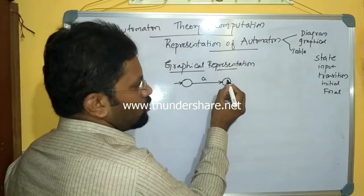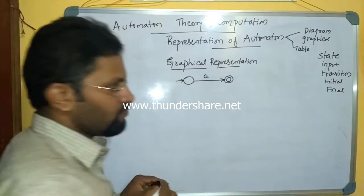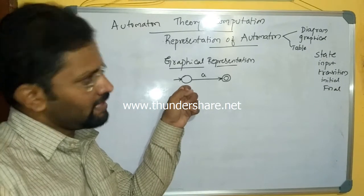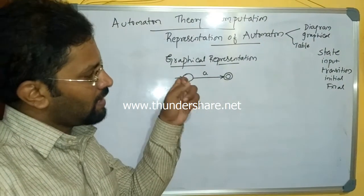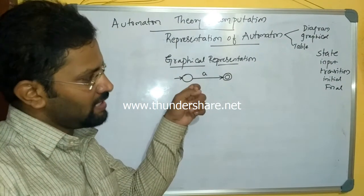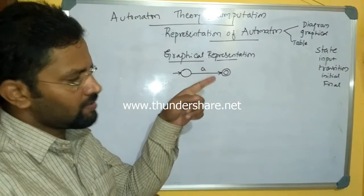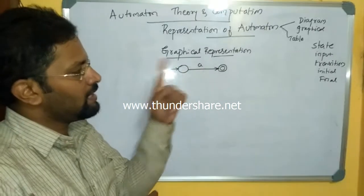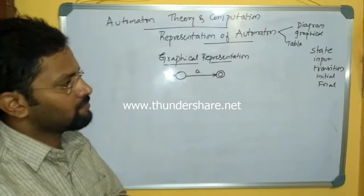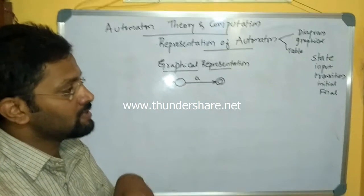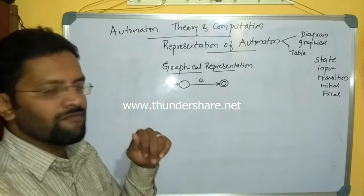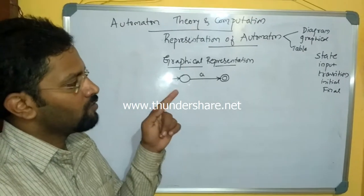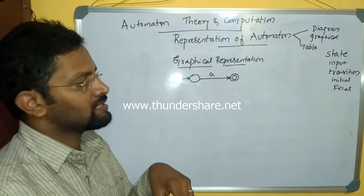Just an arrow mark indicates the initial state, and two concentric circles indicate the final state. To repeat: vertices in a graph indicate states, edges indicate transitions from one state to another, input symbols are represented as labels on edges, an arrow mark represents the initial state, and two concentric circles represent the final state.